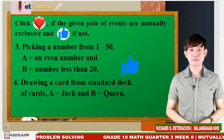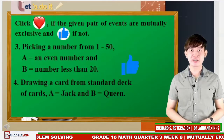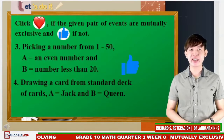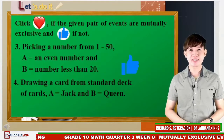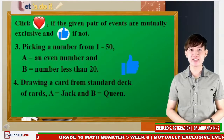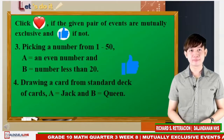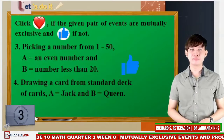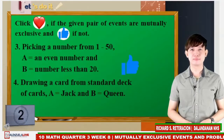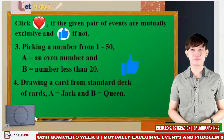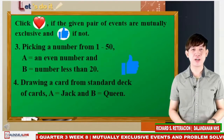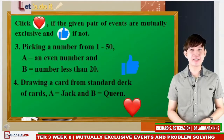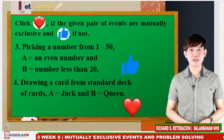Number 4: Drawing a card from a standard deck of cards. A is a set that contains jack and B is a set that contains queen. Right — heart emoji. It is not possible to get a common card.